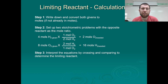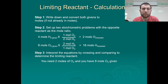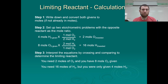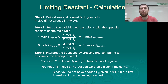Step three: compare the given amounts to the needed amounts to determine the limiting reactant. We need 2 moles of oxygen and we have 8 moles — plenty. But we need 16 moles of hydrogen and we were only given 4. Since we don't have enough hydrogen, we're going to run out of it first, so hydrogen is our limiting reactant in this process.